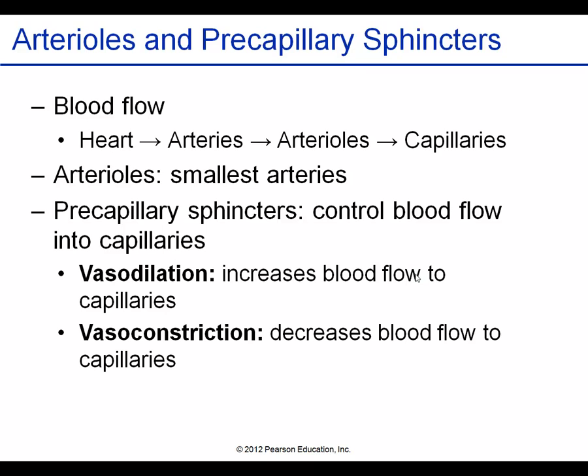Arterioles don't simply lead to capillaries automatically — they have the ability to shift flow to capillaries of choice. The terminal arterioles have pre-capillary sphincters, which are valves right at the opening of the capillaries. These can switch blood flow depending on whether that particular organ or tissue is in demand for more oxygen. If a tissue needs more oxygen, the pre-capillary sphincters open, allowing more blood into those capillaries. If not, blood can be shifted to more important targets.